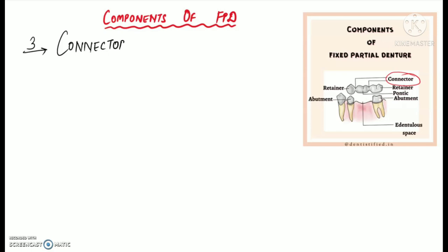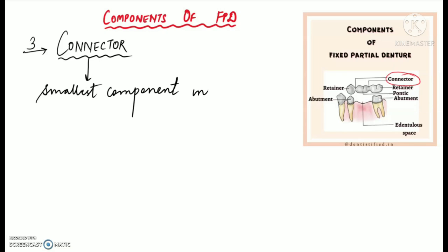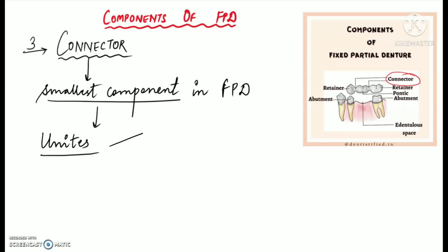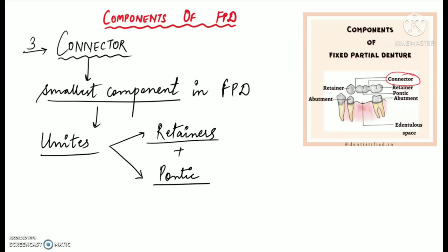The next component of FPD is the connector. Connectors are the smallest and most carefully designed components of fixed partial denture because their position and design plays an important role for the success of the dental restoration. A connector is that portion of the fixed partial denture which unites the retainers and the pontics, as we can see in this picture.